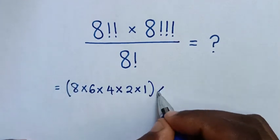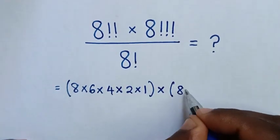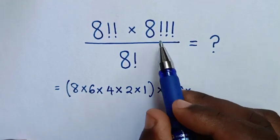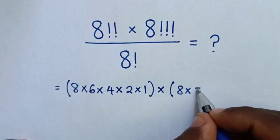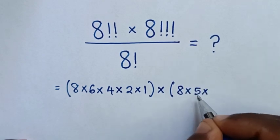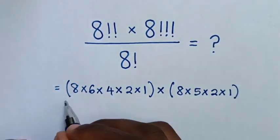Then bracket times, 8 triple factorial is same as 8 times, because in here is triple factorial it will be 8 minus 3 is 5, then times 5 minus 3 is 2, then times 1 bracket over.